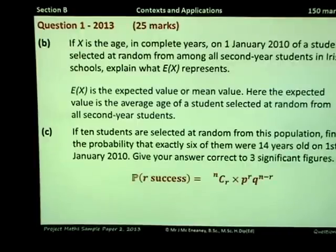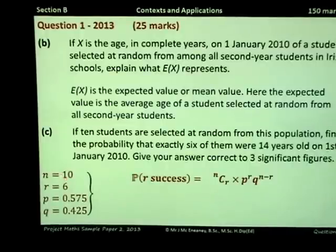The binomial distribution formula is given in the maths formula tables. The probability of R successes is N choose R multiplied by P to the R times Q to the N minus R. N is the number of trials, R is the number of successes, P is the probability of success in a single trial, Q is the probability of failure in a single trial. Q is 1 minus P, so that's 1 minus 0.575, which gives 0.425.